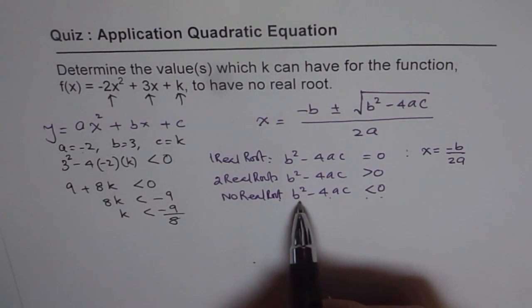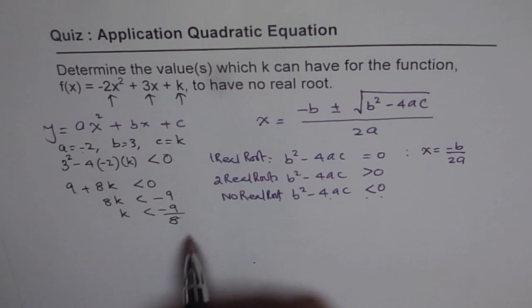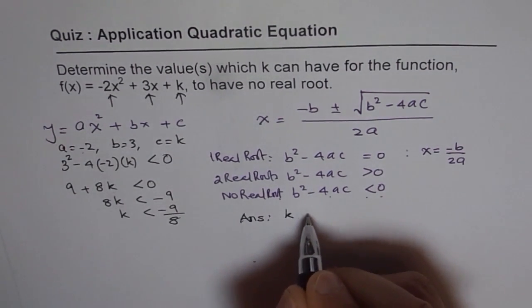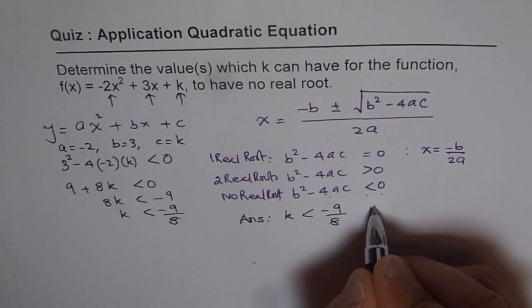We have to solve this inequality b² - 4ac less than 0. Once we solve this inequality, we get our answer. Our answer is for k less than -9/8, no real roots.